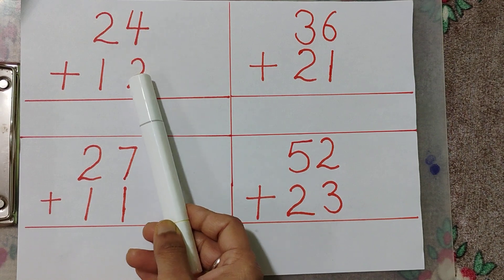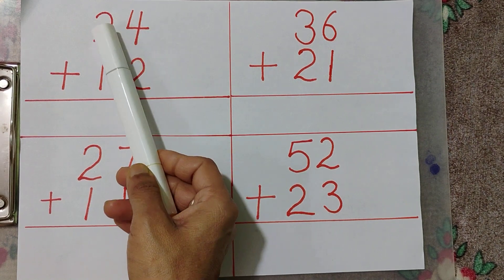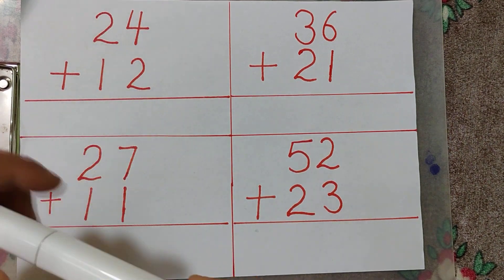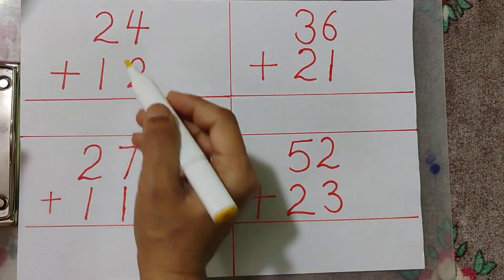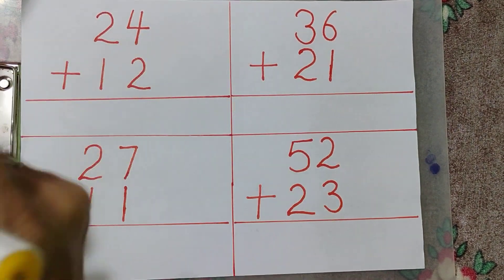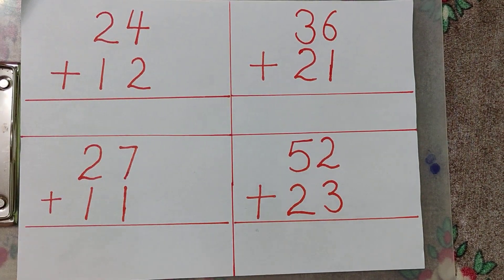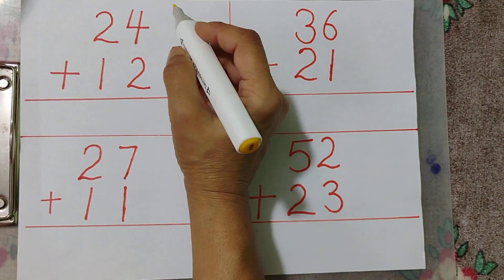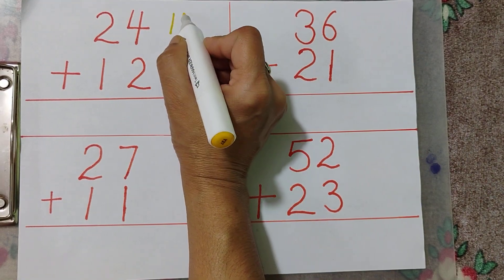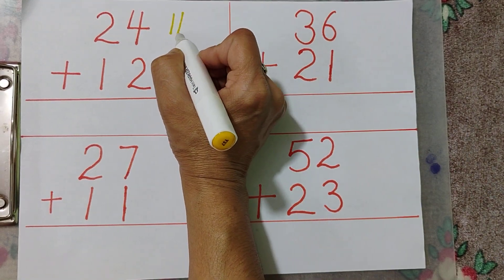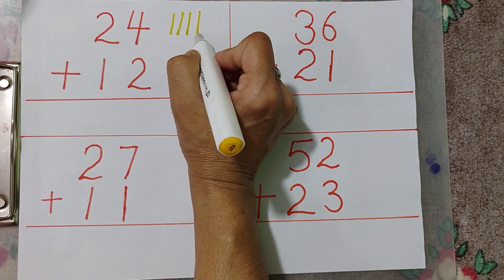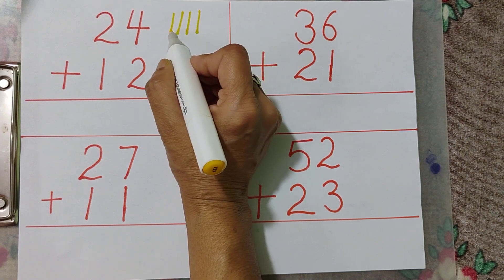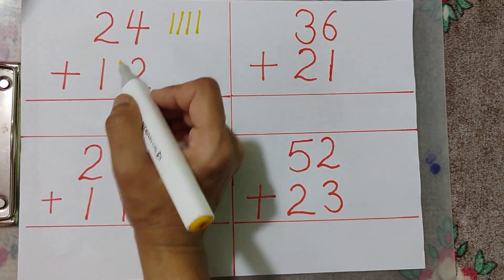4 plus 2, 2 plus 1. 4 plus 2. 1, 2, 3, 4 — 4 lines.